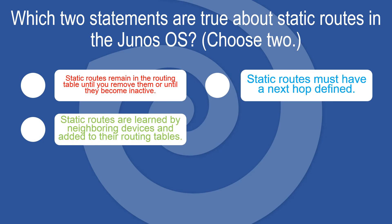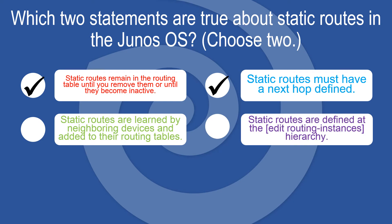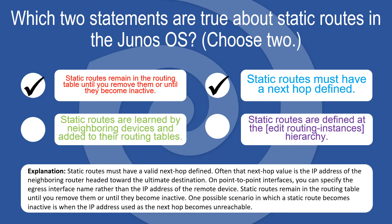Static routes are not learned by neighboring devices. Static routes must have a valid next hop defined — often the IP address of the neighboring router toward the ultimate destination. On point-to-point interfaces, you can specify the egress interface name rather than the IP address. Static routes remain in the routing table until removed or until they become inactive, such as when the next hop IP address becomes unreachable.